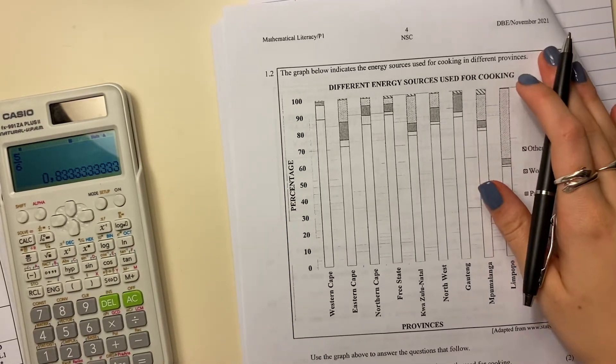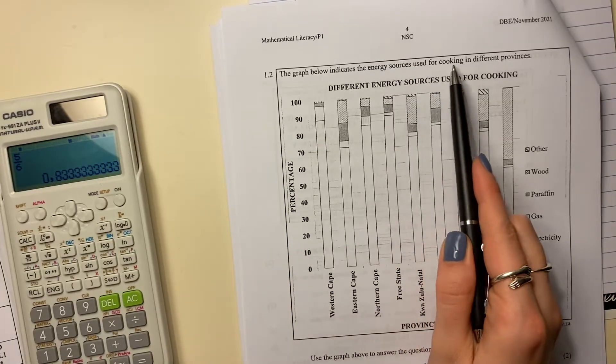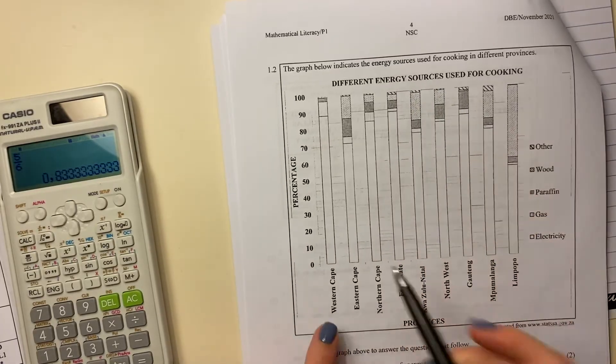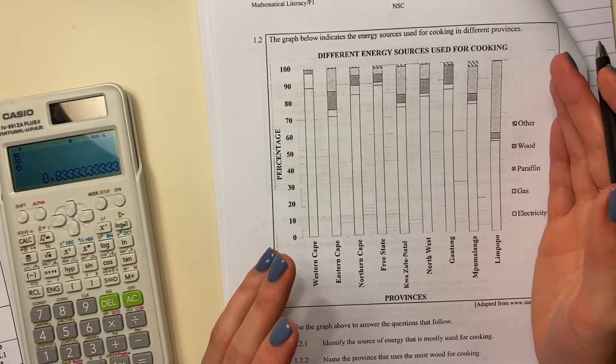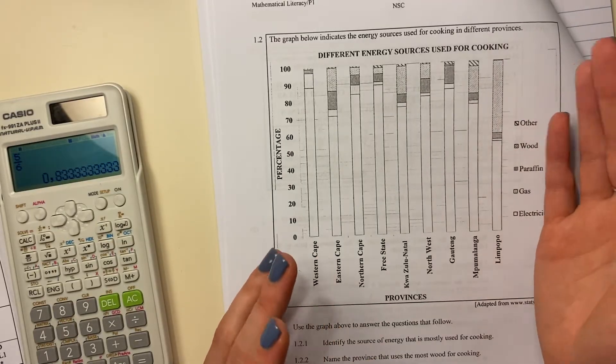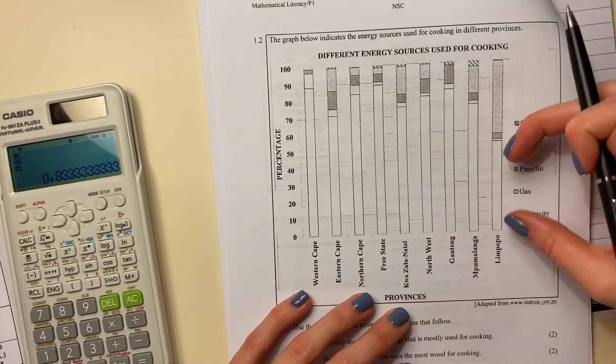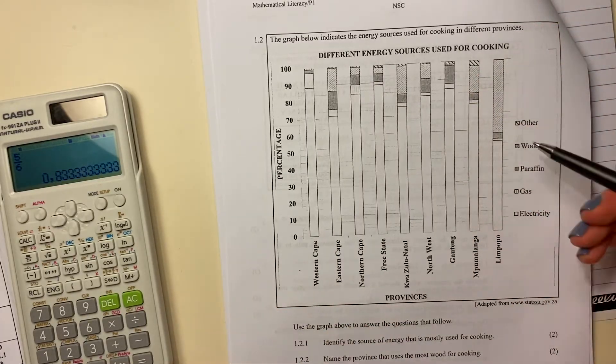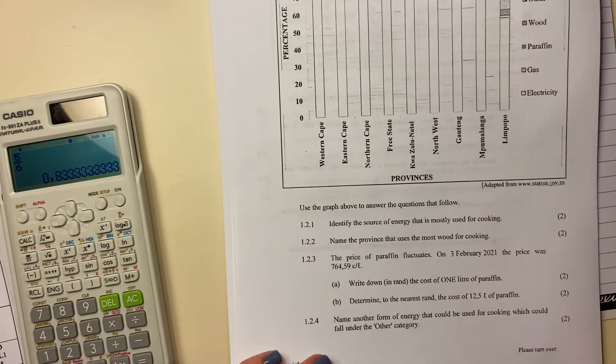All right, let's look at the next question. It says the graph below indicates the energy sources used for cooking in different provinces. So these are the provinces of South Africa, and obviously this will be slightly clearer for you. When I printed it, my printer just be doing its own thing, but it's showing within each province how it's split between the different forms of ways that you can cook. And it's probably going to ask us to interpret this a bit.